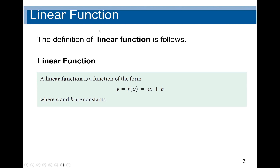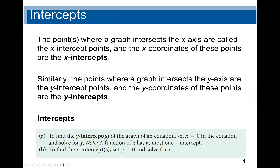We start with the definition of a linear function. A linear function is a function of the form f(x) = ax + b. Here, a and b are constant values. Normally, a is the slope of the graph, and b will be the y-intercept. The y-intercept means when x equals zero, the value of y is called the y-intercept.